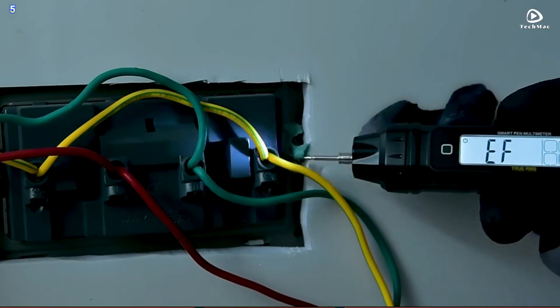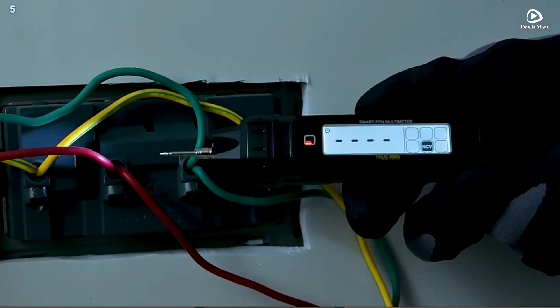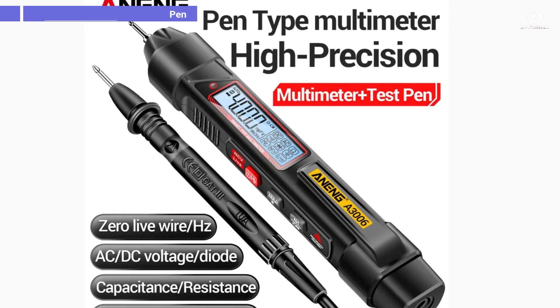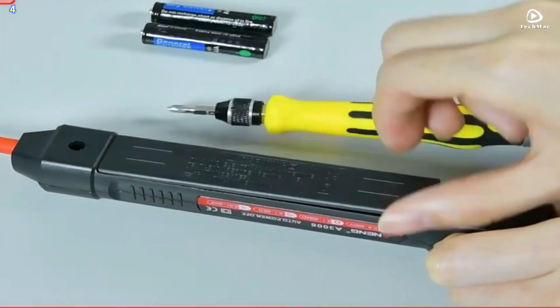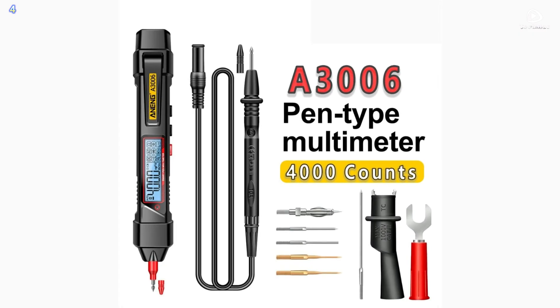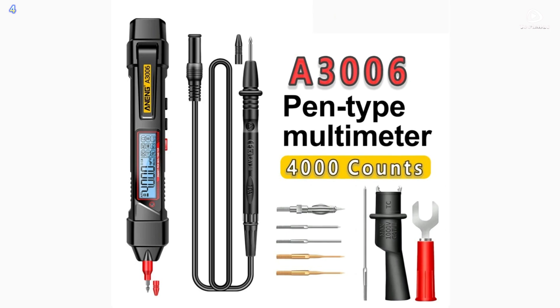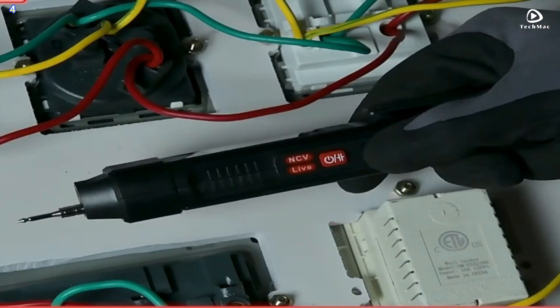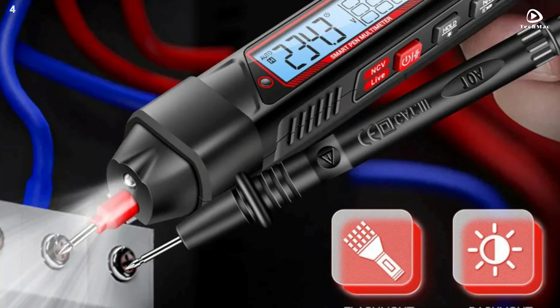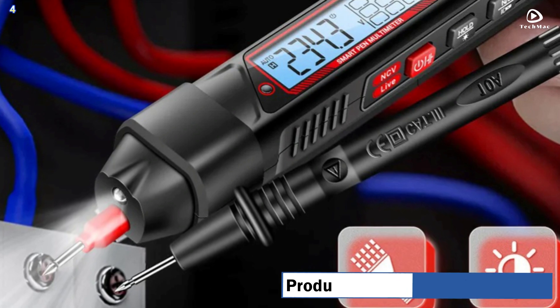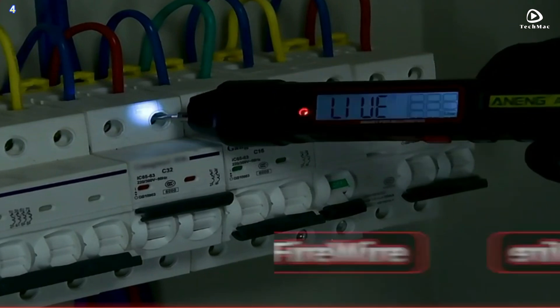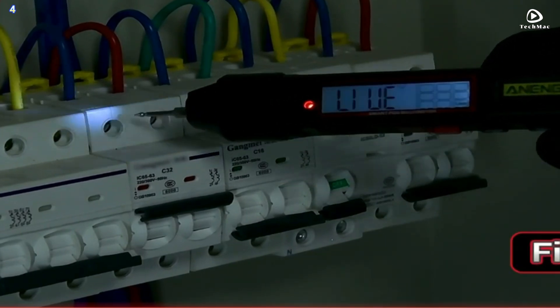Number 4: Anning A3006 Multimeters Pen. This little device is packed with features. It measures AC and DC voltage, resistance, continuity, and even diode tests. But what sets it apart is its smart technology: automatic identification of the test parameters. No more fumbling with settings, just touch the probes to your test points and you're good to go. This pen-type digital meter is a small 4000-bit true RMS automatic scanning instrument.